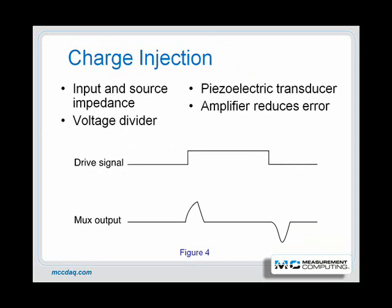Analog switching devices have another undesirable characteristic called charge injection. This means that a small portion of the input gate drive voltage is coupled to the analog input signal and manifests as a spike in the output signal. This glitch produces measurement errors and can be seen riding on the input signal when the source impedance is too high. A compensating circuit can minimize the effects of charge injection, but the most effective method is to keep source impedance as low as possible.